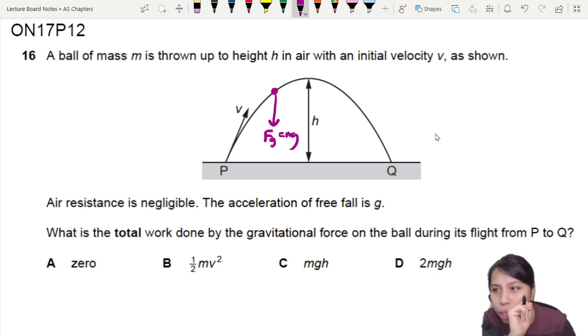MGH? Oh, or 2 MGH? Now the answer is do not choose 2 MGH. You say, miss, but the ball go up and then the ball come down. So don't it be 2?